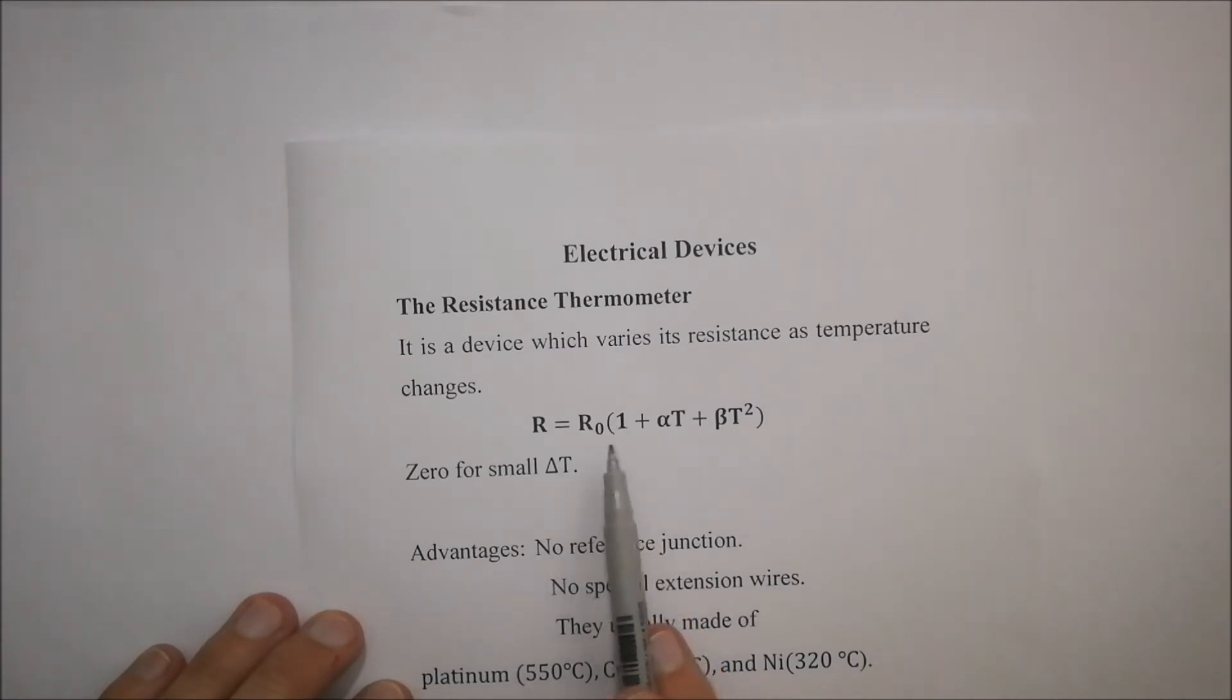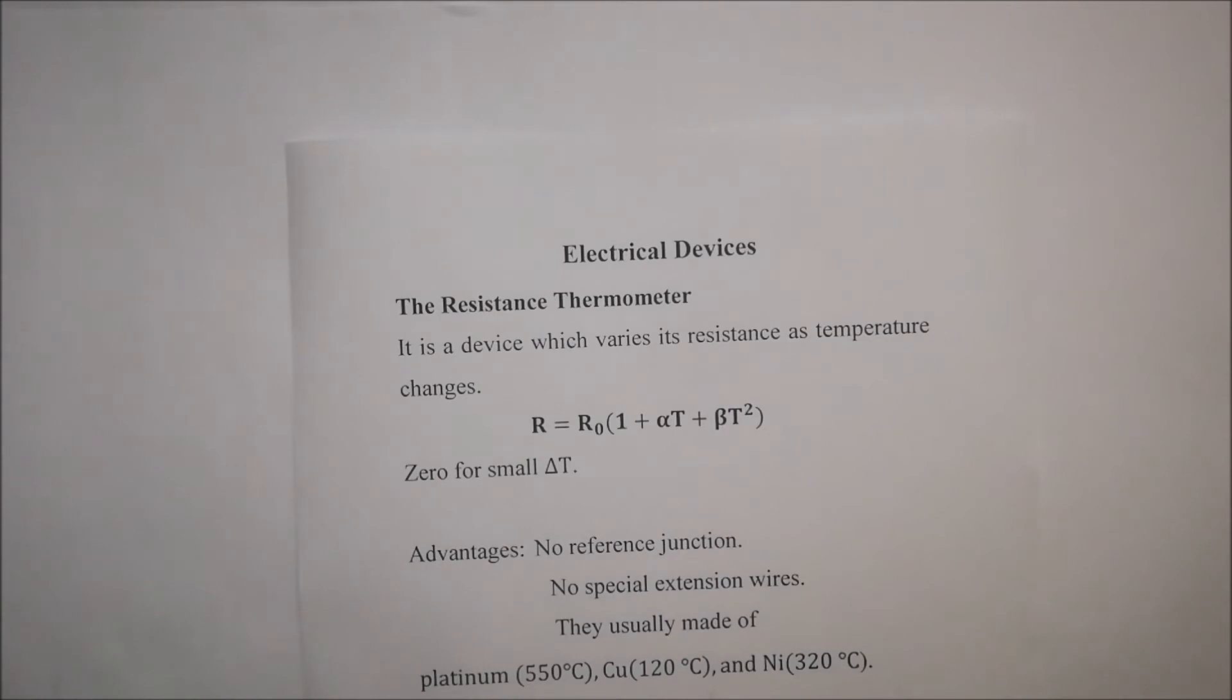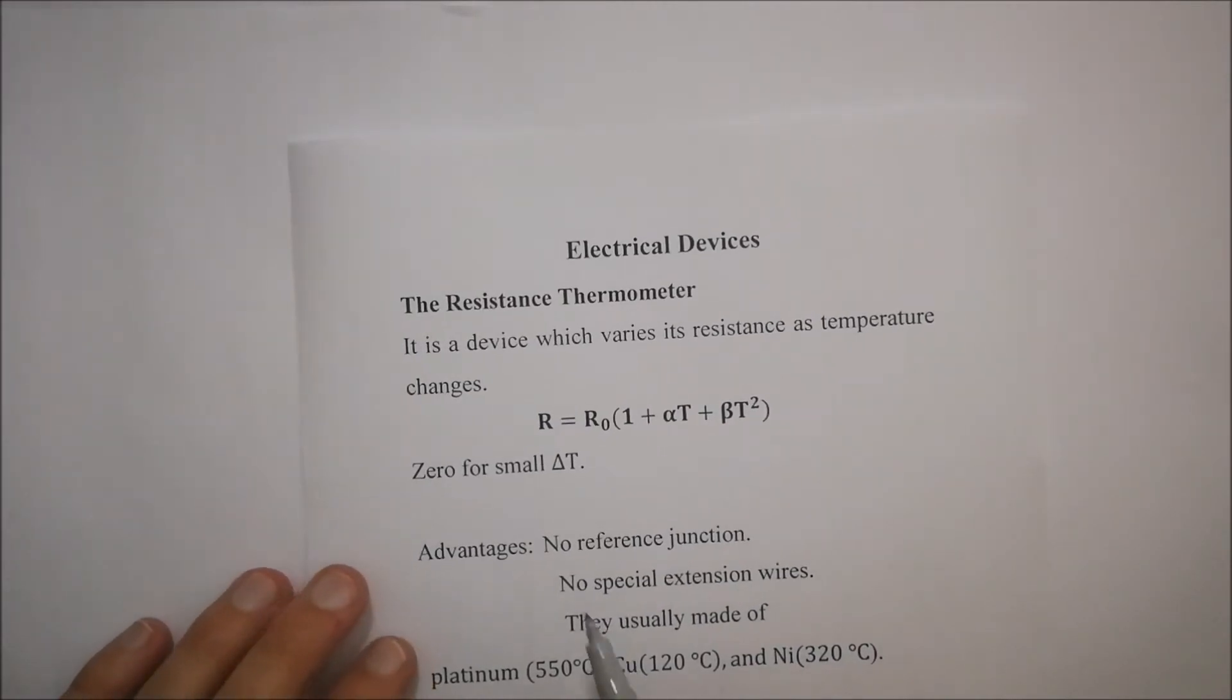For this resistance thermometer, there's an equation of the resistance equal to the resistance at zero degrees Celsius, open brackets, one plus alpha multiplied by the temperature, plus beta multiplied by the temperature squared. So alpha and beta has got to do with the coefficient of frictions. Alpha is a linear coefficient of friction. Beta is the area coefficient of temperature. And it would be zero for very small values of the temperature.